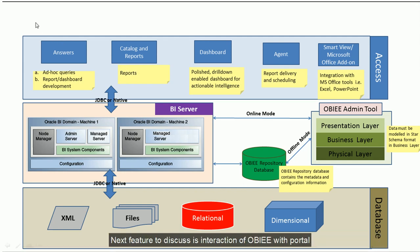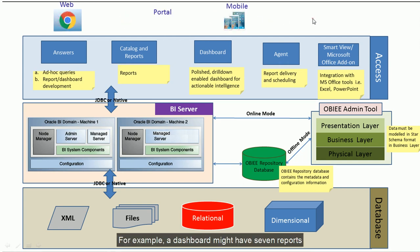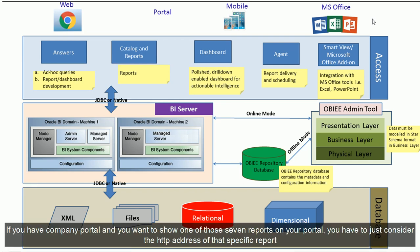Another important feature is OBIEE's interaction with portals. For example, if your dashboard has seven reports, all those reports have their own HTTP address. If you have a company portal and want to show one of those reports on it, you just need to take the hyperlink of that specific report and embed it in your portal.